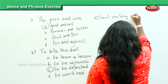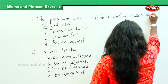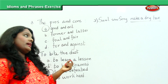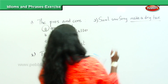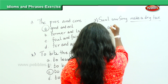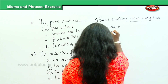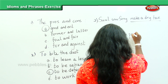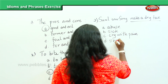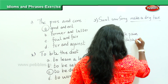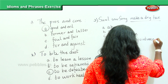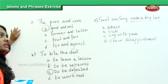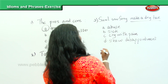Consider the sentence: 'Sunil saw Sony make a dry face.' The idiom here — 'make a dry face' — would be highlighted, underlined, or italicized. The options are: abuse, sick, cry with pain, disappointment. What does making a dry face mean? The answer is showing disappointment.